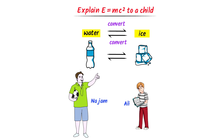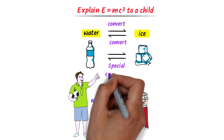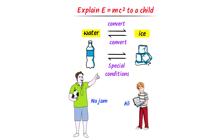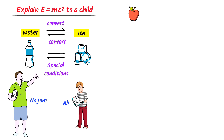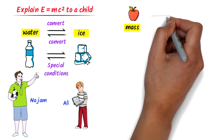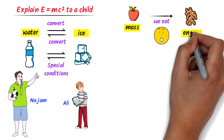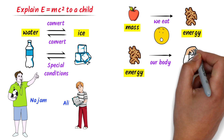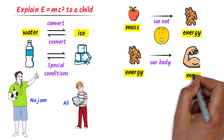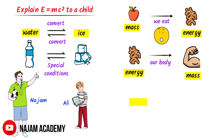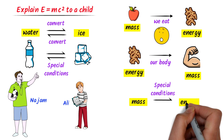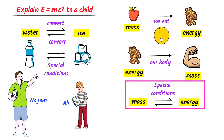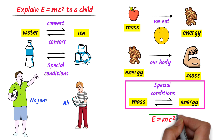So we say that we can convert water into ice, and ice into water, under special conditions. Remember that we cannot convert water into ice, and ice into water, at normal conditions. Similarly, consider an apple. We know that an apple possesses some well-known mass. Now when we eat an apple, it is converted into energy. Secondly, our body will use this energy to build our muscles, which also possess some well-known mass. Therefore, at special conditions, we can convert mass into energy and energy into mass. This inter-conversion of mass and energy is known as E equals mc squared.